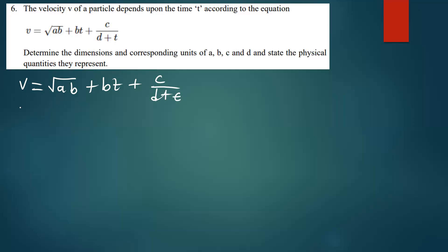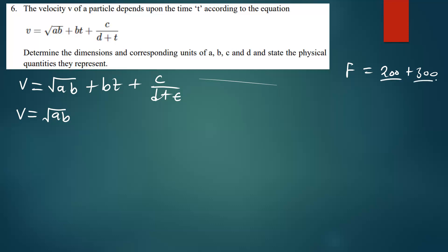We equate each of these terms to V. The reason we do that is that for you to add anything — for example, if you have a force on one side and you are adding 200 and 300, those terms must have the same units and both must be forces. For two things to be added, they must be like terms.